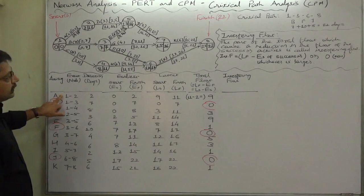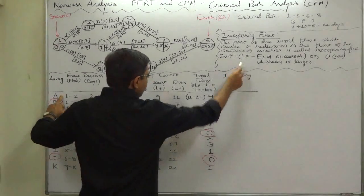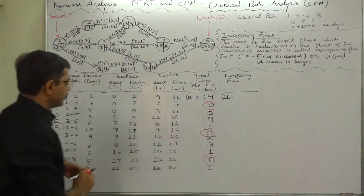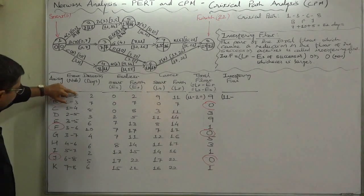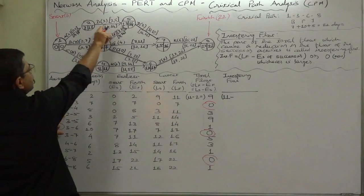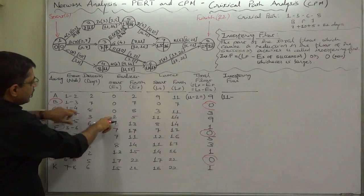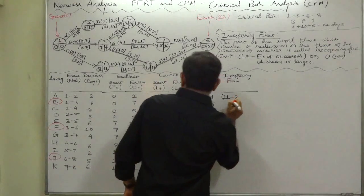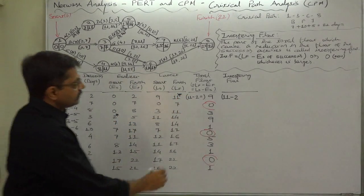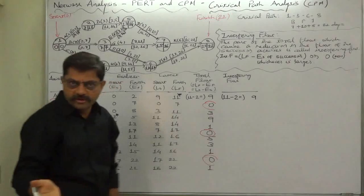Let's take the interfering float of activity A. Latest finish time of activity A is 11, minus earliest start of successor. Which one is the successor of A? A's end event is 2 and start event of D is 2, so D is the successor. Earliest start time of D is 2. So 11 minus 2 equals 9. 9 or 0, whichever is higher - obviously it is 9.